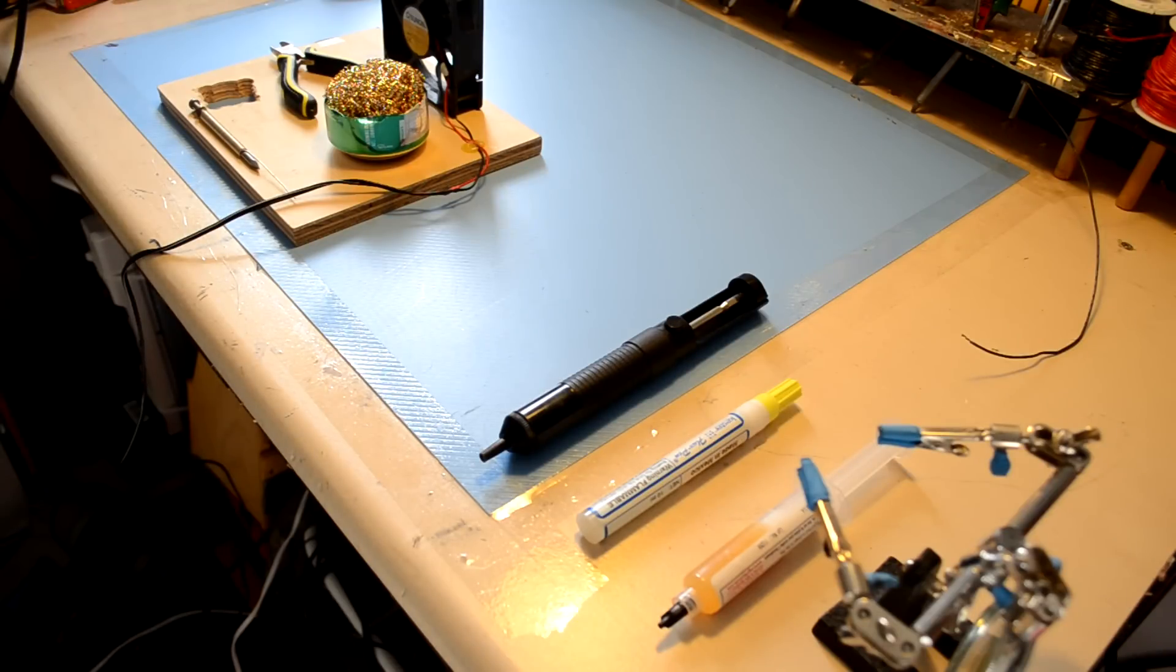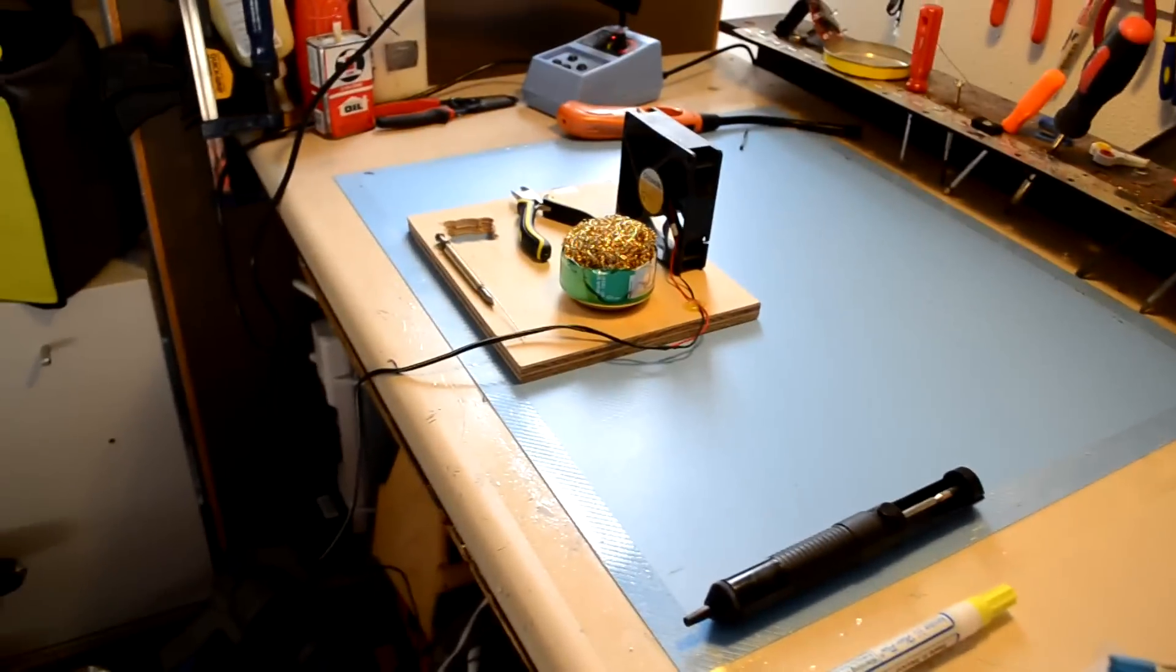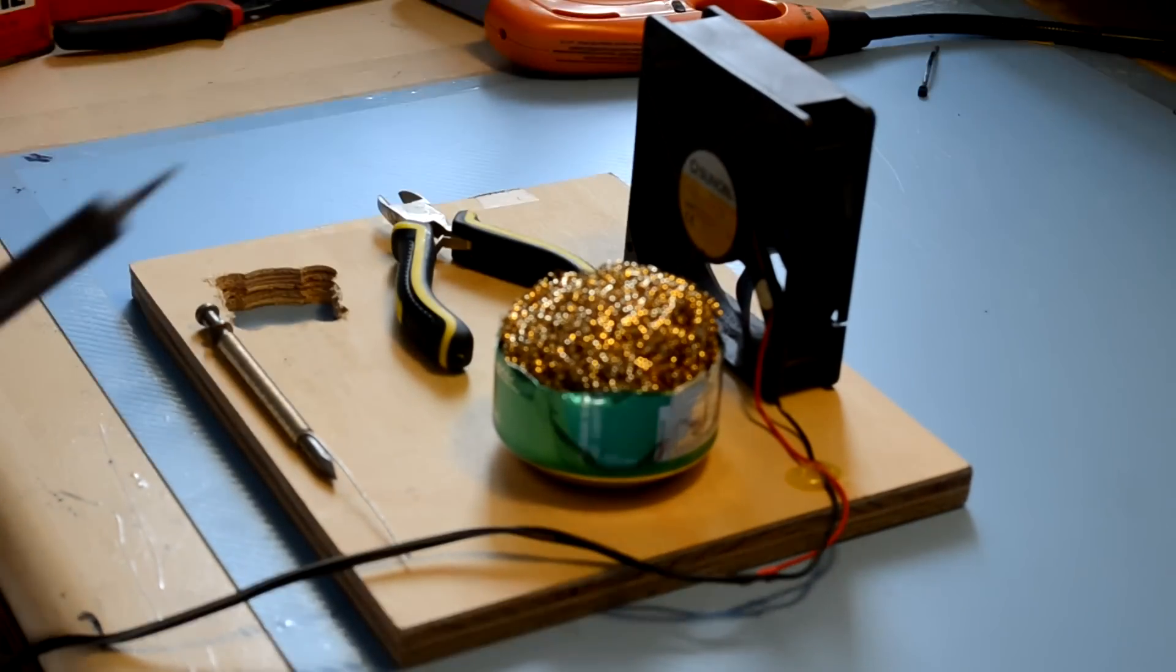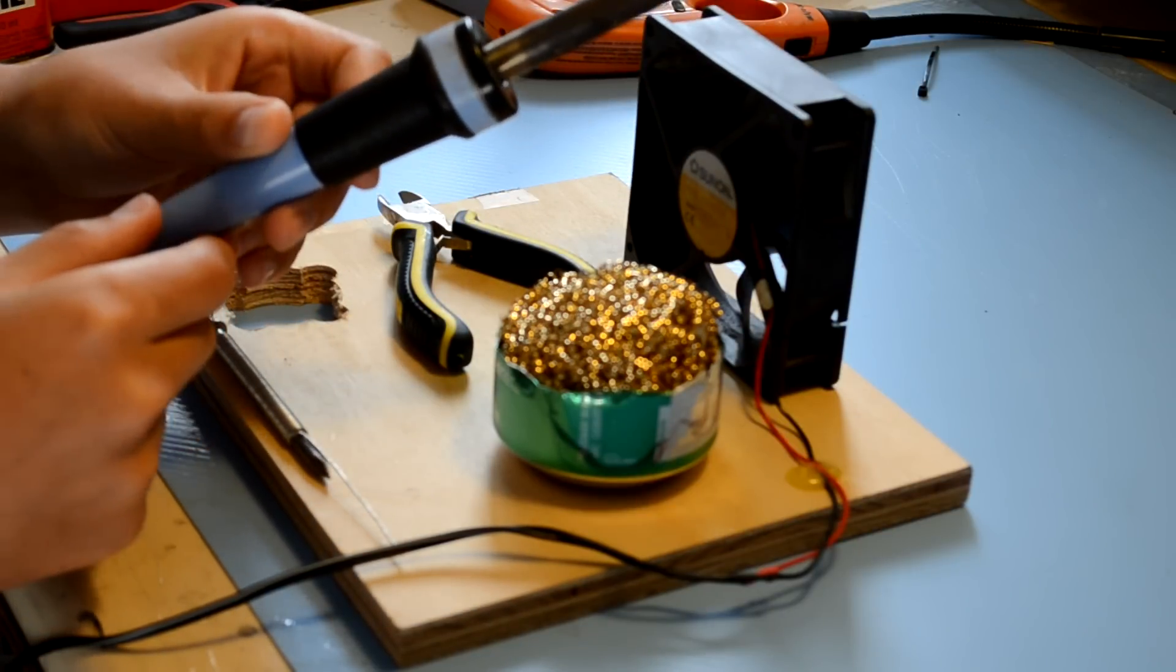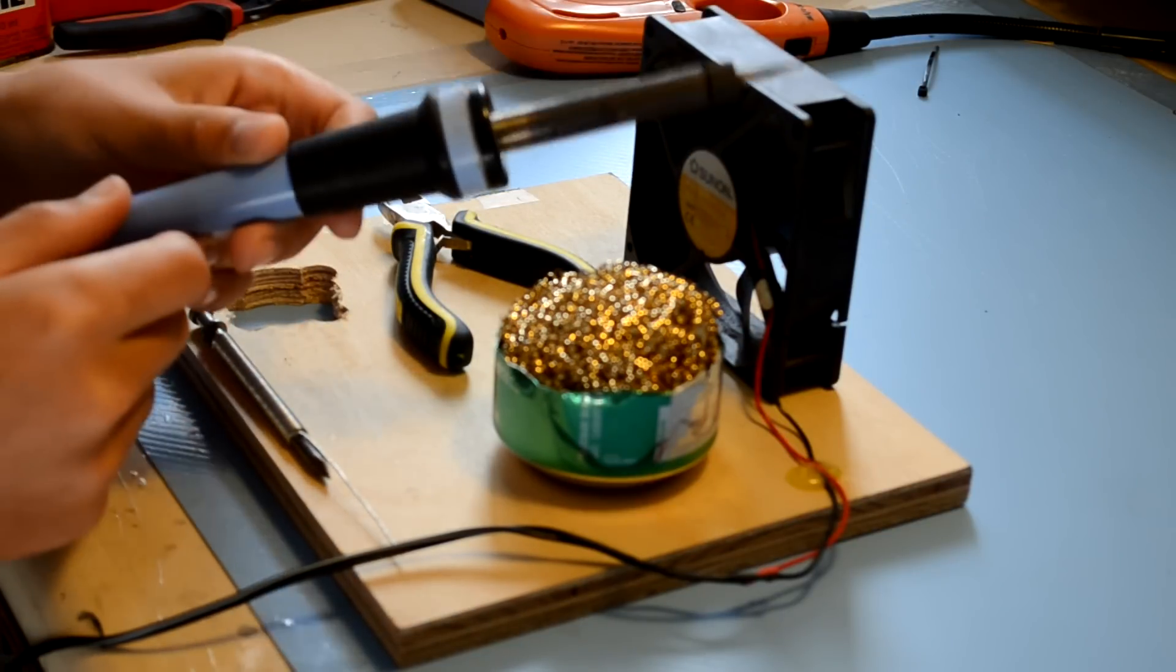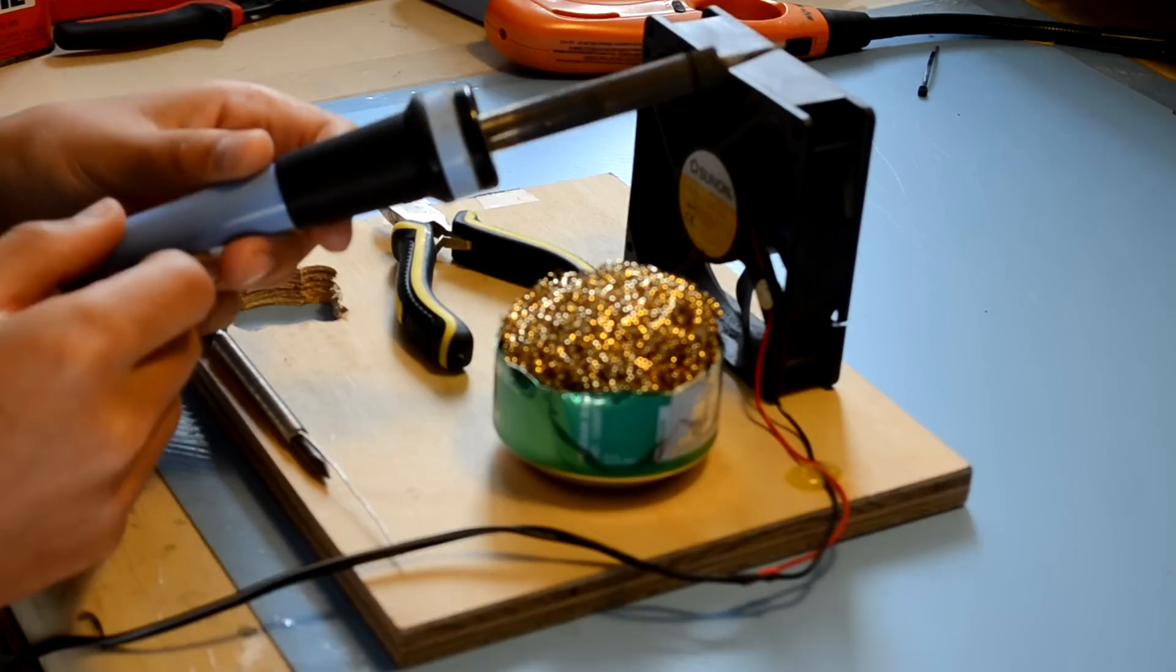So first things first, I'm going to show you the tools that you're going to need, starting with the ones you need to start soldering. You're going to of course need a soldering iron. This one's temperature controlled. I highly recommend it. It just makes soldering much, much easier.